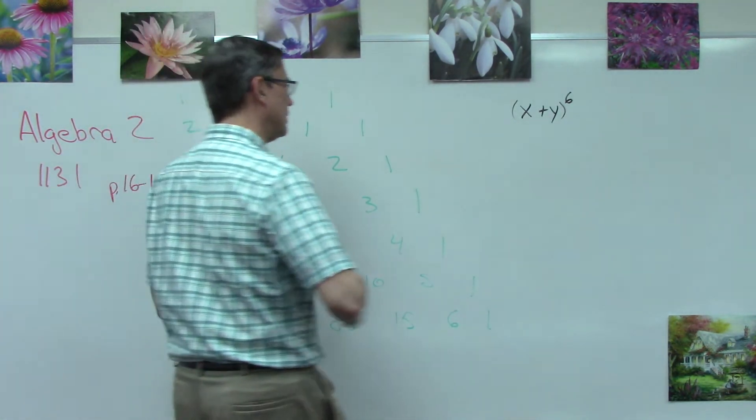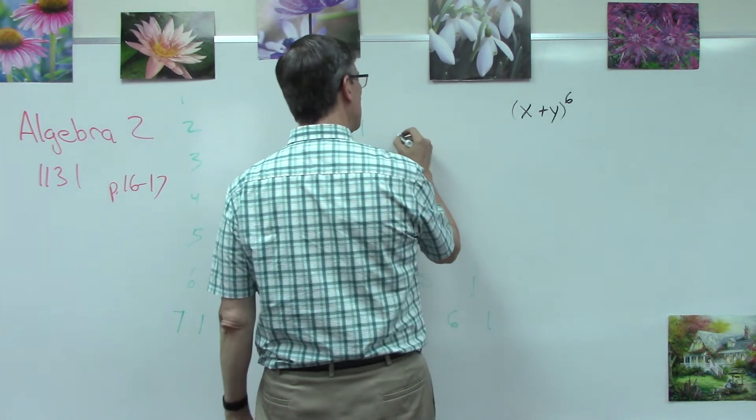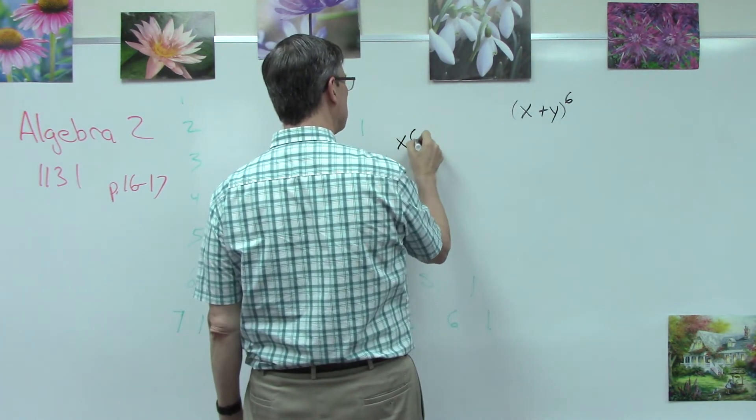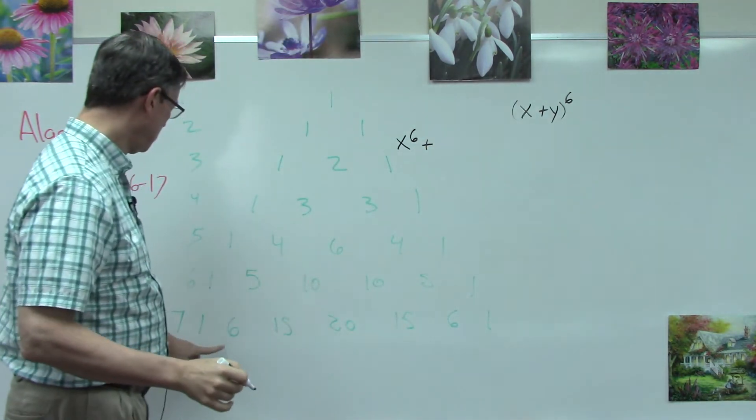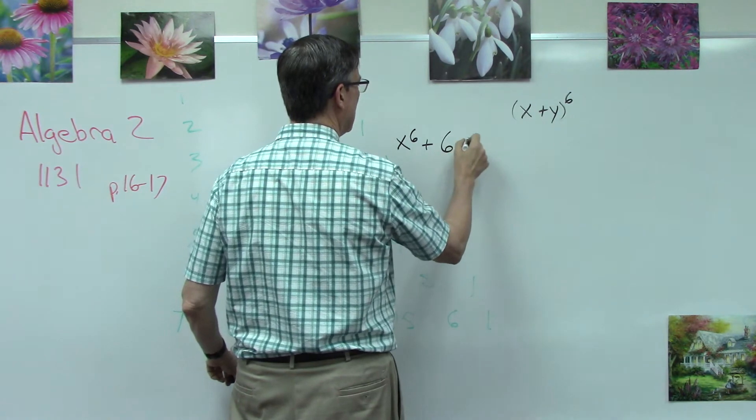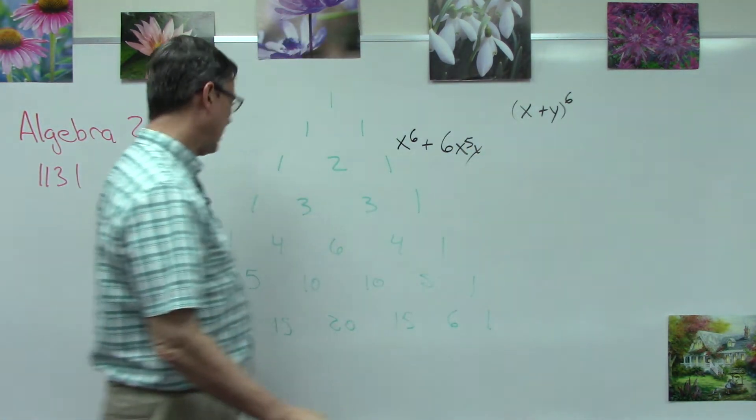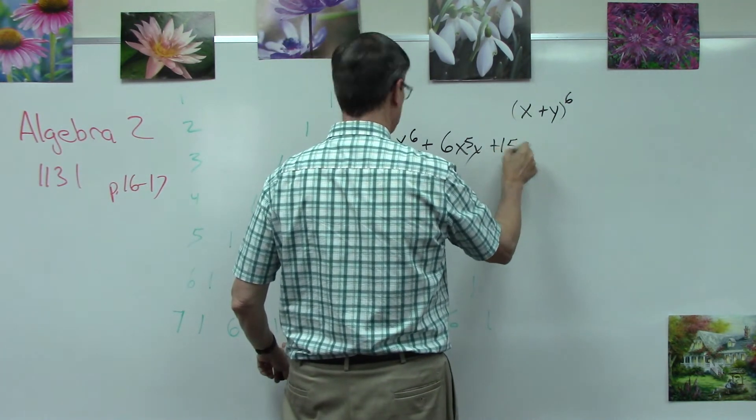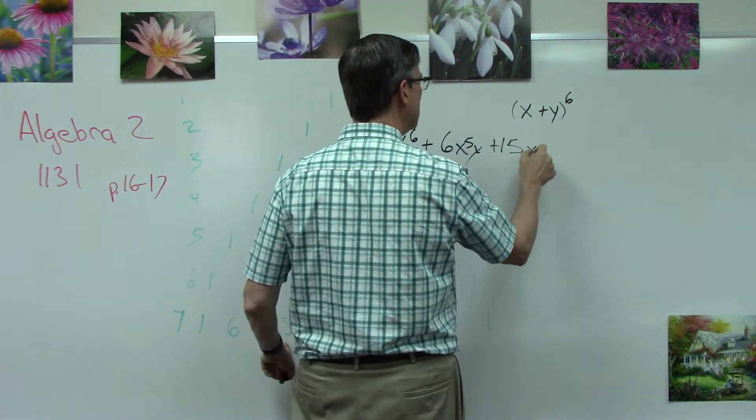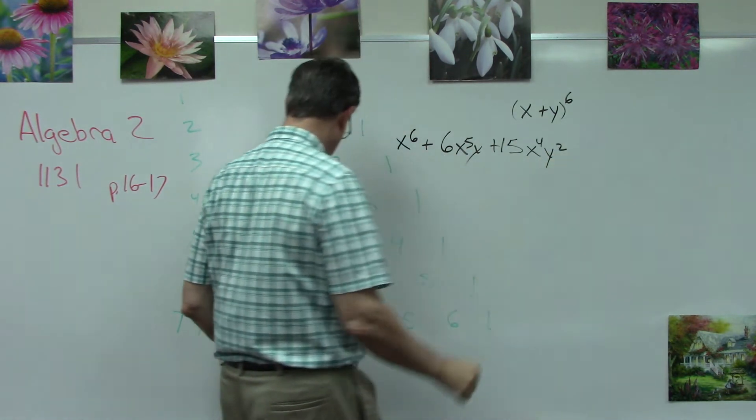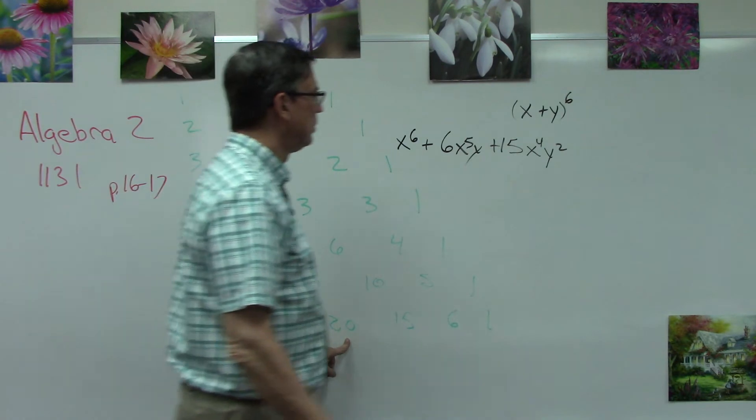So x to the sixth power, and that's what the one is, plus 6x to the fifth y to the one, plus 15x to the fourth y squared. We decrease the exponent on x and increase the exponent on y.